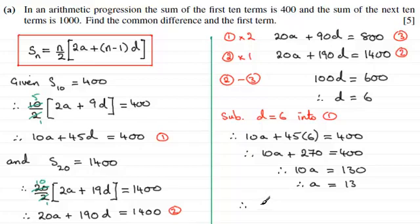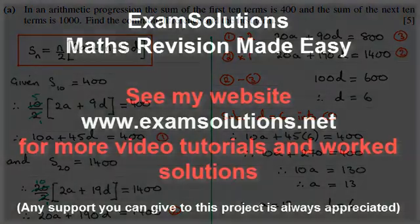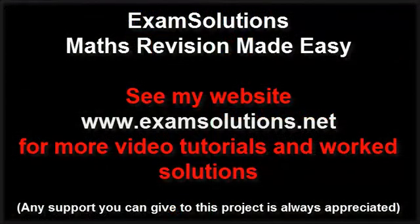So in summary then, therefore we've got A equals 13, that's the first term, and the common difference D is 6. Thank you.